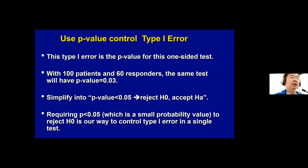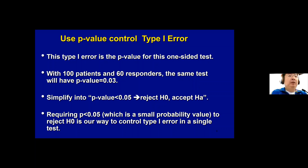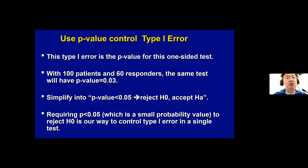If we continue with 100 patients and 60 responders, the same test gives a p-value of 0.03 — even smaller than 0.05. What we do every day is: if we see a p-value less than 0.05, we reject the null hypothesis and accept the alternative. Requiring a p-value less than 5% is our way to control type 1 error in a single test setting.